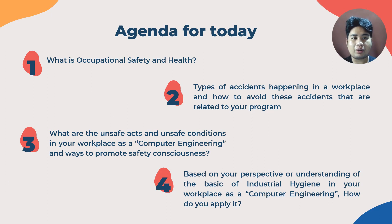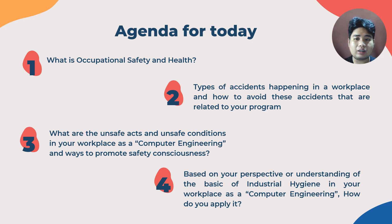As you can see on our slide, we have a lot of agenda for today, so please bear with me. These are the topics I will explain to you, as well as questions we will answer in order to easily comprehend the information provided. We have six agenda. The first four are: number one, what is occupational safety and health; types of accident; unsafe acts and unsafe conditions; and perspective or understanding of basic industrial hygiene.